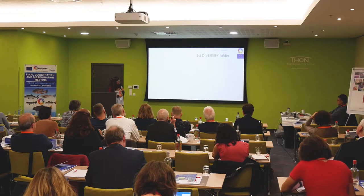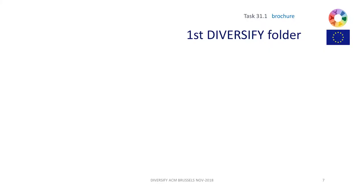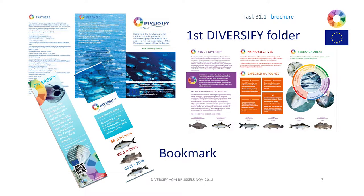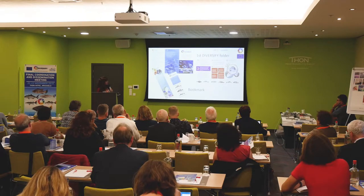One of the first tasks was to have a first folder to present the project. We wanted to disseminate the main points: the main aim, what we expect to get, why we chose those species, and of course the list of partners. This folder has been distributed all over Europe and the world — we always carried these folders wherever we were present. We also made bookmarks that were very handy and wanted because they were, apart from handy, very beautiful with nice pictures. These have also been distributed at all aquaculture conferences.